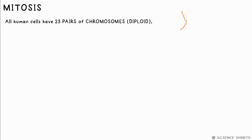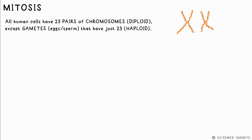Eukaryotic cell nuclei contain DNA, which is stored in several chromosomes. Humans have 23 pairs of these in every nucleus, so we call them diploid cells. That's not the case for gametes though — sperm and egg cells. They have just 23, not 23 pairs. They have half the amount, so therefore we call them haploid cells.